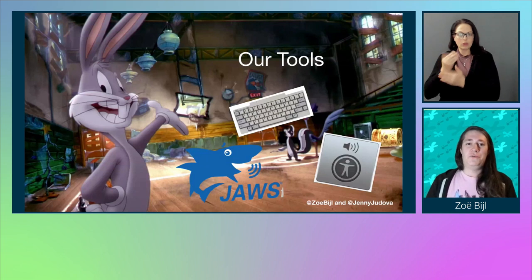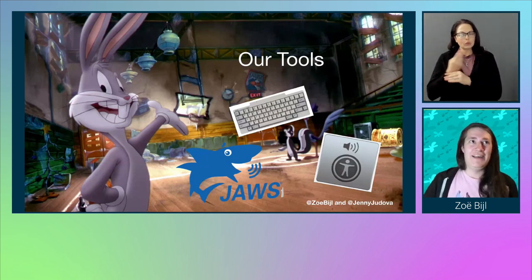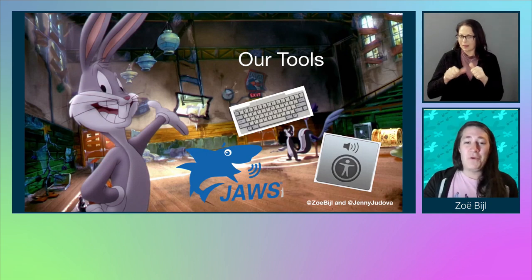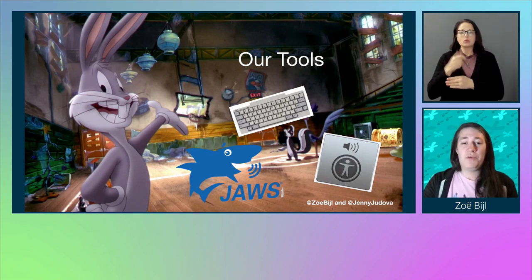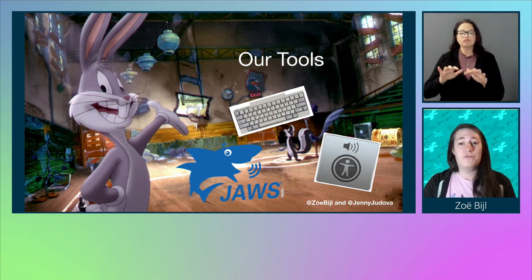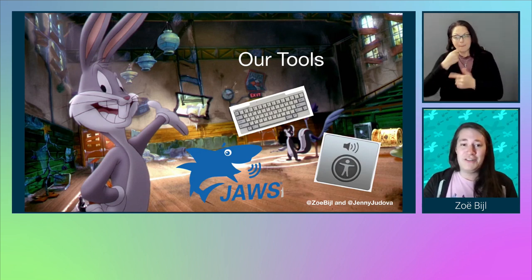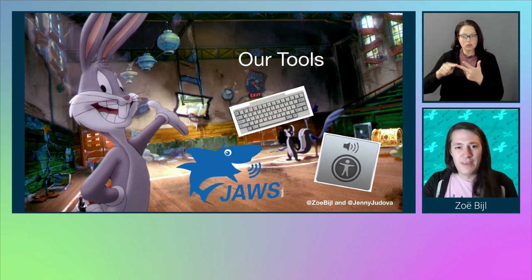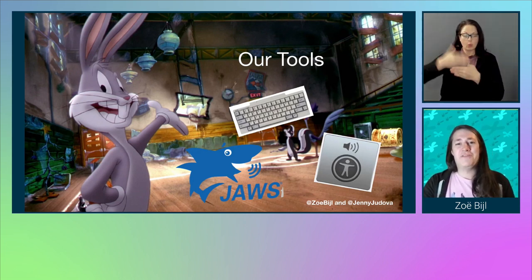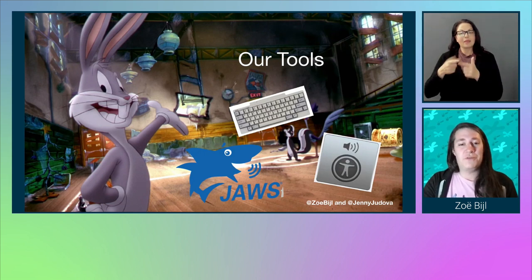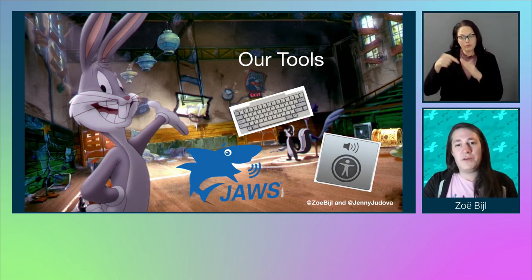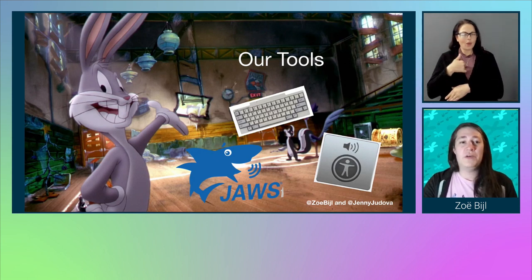We'll use our finest tools to check their accessibility — here we have Bugs Bunny pointing at our tools. We'll use a keyboard to check for basic navigation, Apple's VoiceOver screen reader to look at the Souvenir Store, and the JAWS screen reader to play some games on Windows. Last but not least, we'll dive into the code with Chrome DevTools. Before all of this seriousness, we'd love to tell you why we chose the Space Jam website.